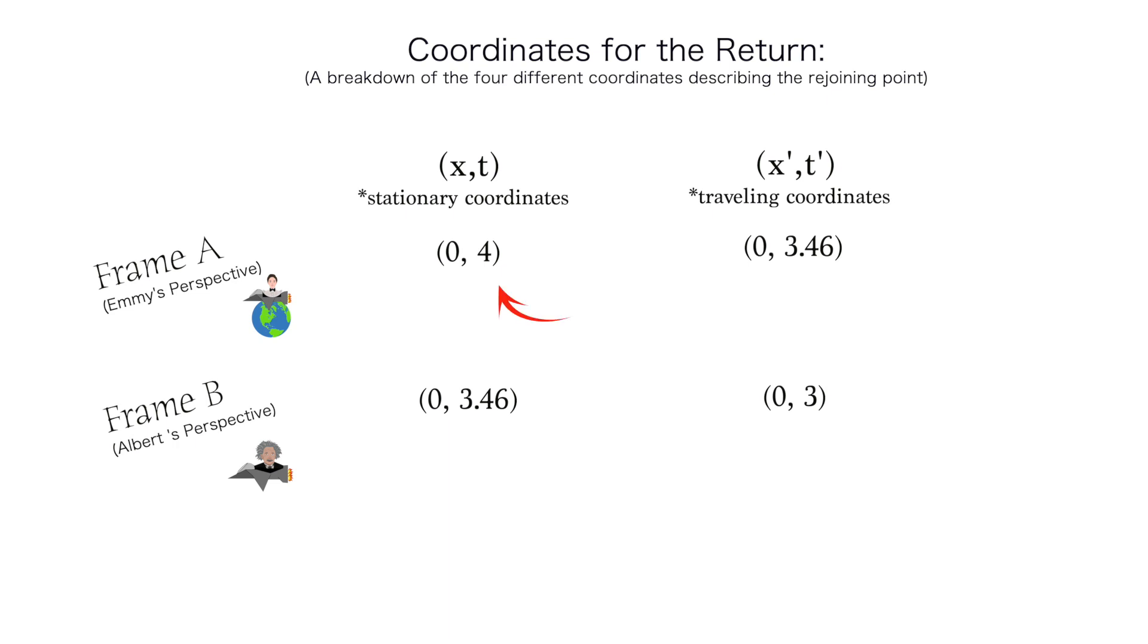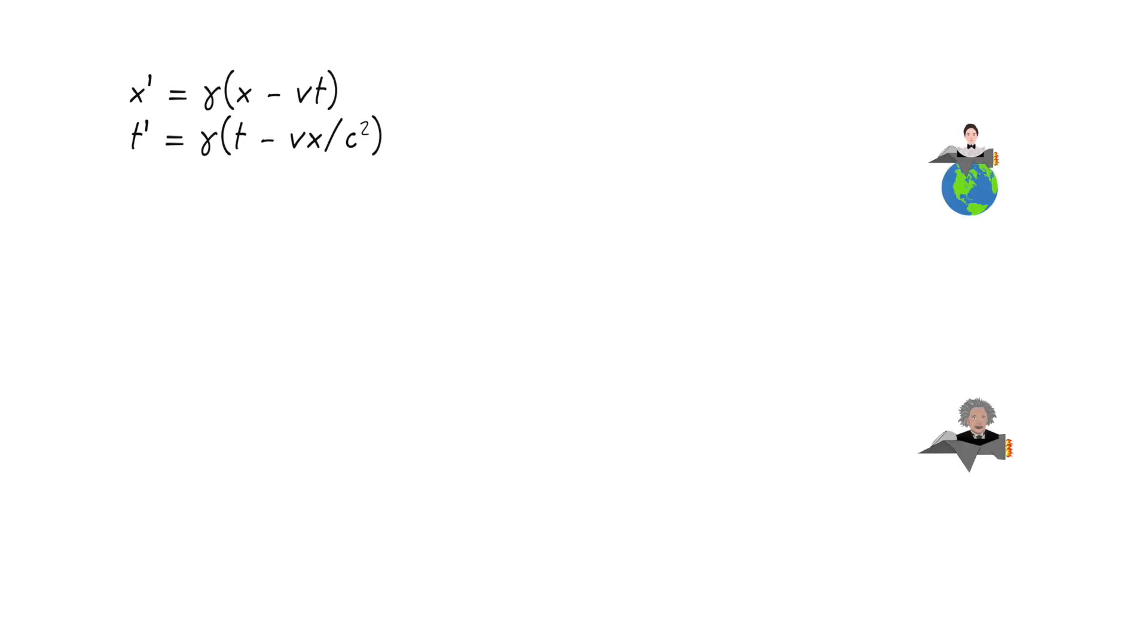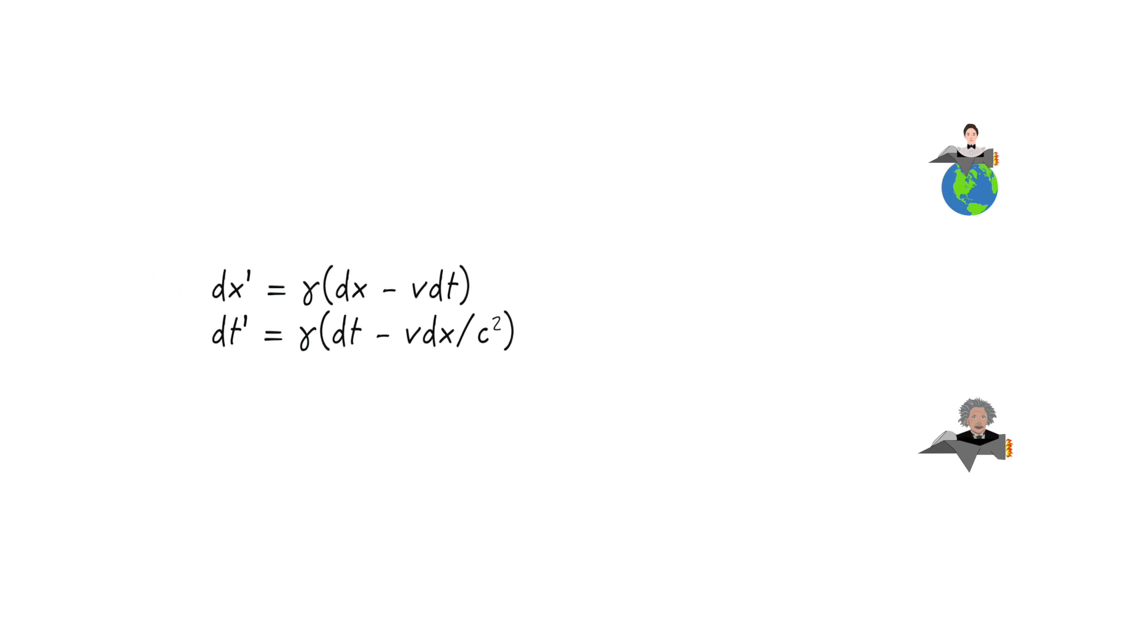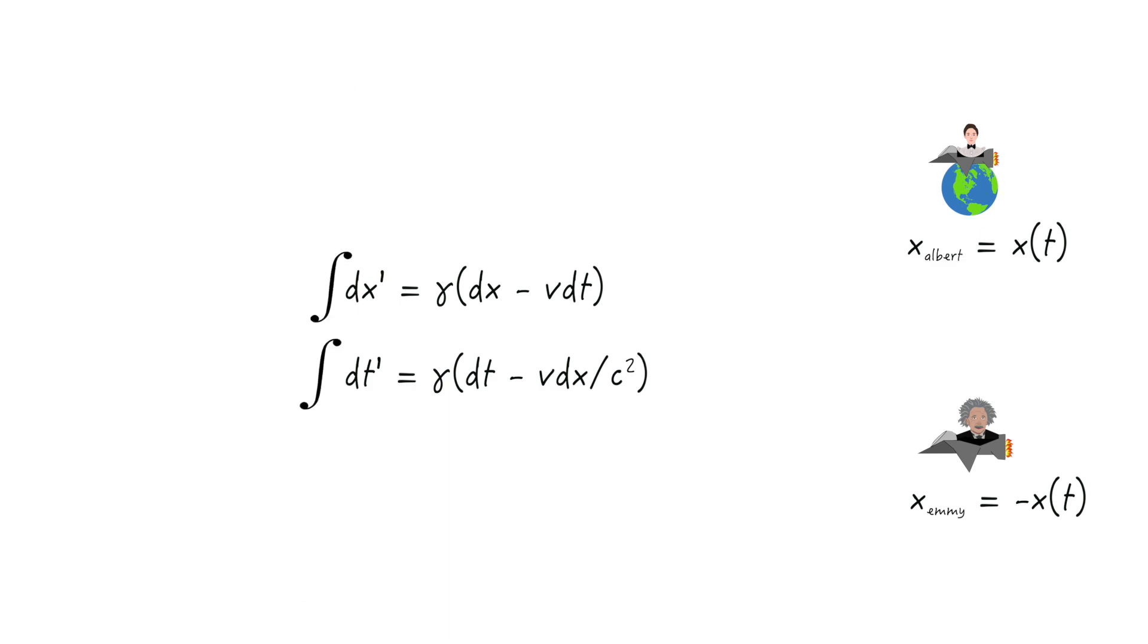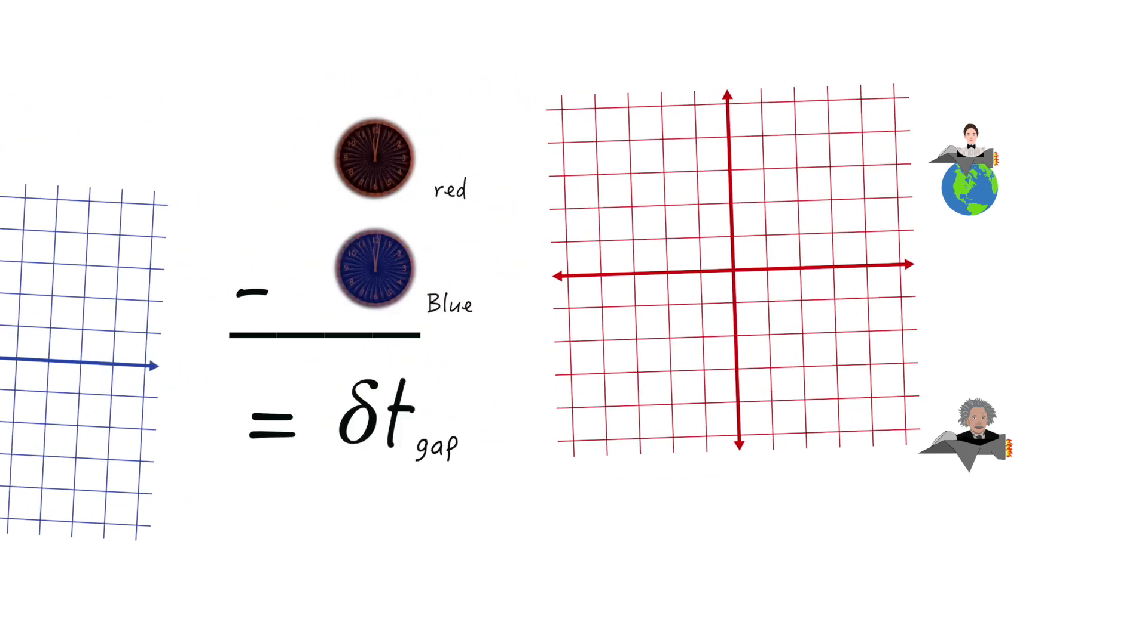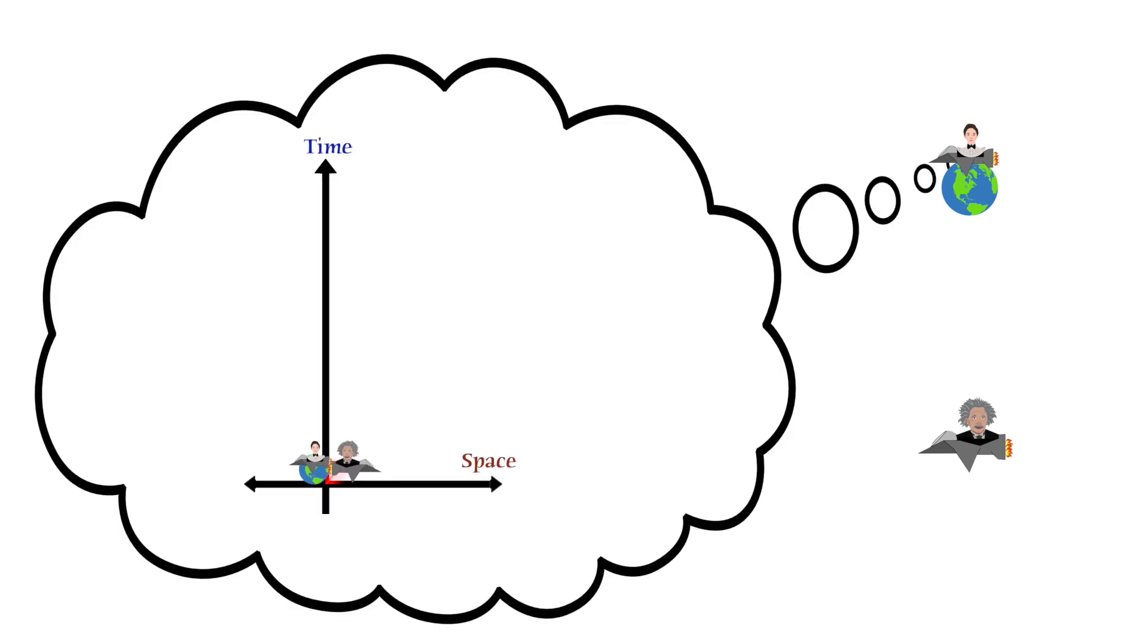Thus, Emmy now claims four years have passed for her and about 3.4 for Albert, while Albert claims 3.4 years have passed for him, but only 3 years for her. But there's one part of the calculation still missing. Being that the Lorentz transformations are actually differential equations, they'll be affected by changes in velocity. So both Emmy and Albert now have to calculate how much time went missing from each other's perspectives at the turnaround point. There's two different ways to approach these calculations. You can model a gradual deacceleration and acceleration equation of motion and integrate the Lorentz equations, or you can jump discontinuously into a frame with opposite velocity and calculate the synchronization gap.